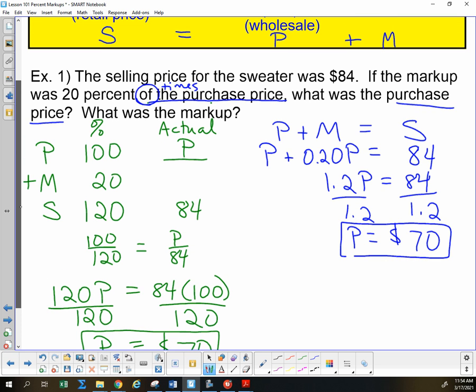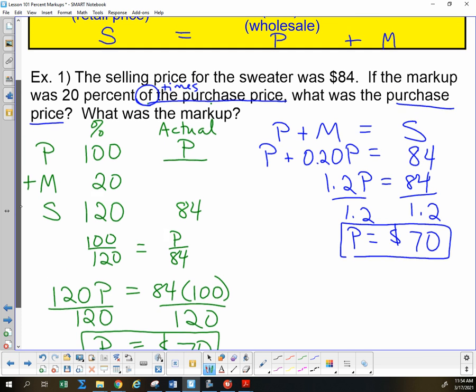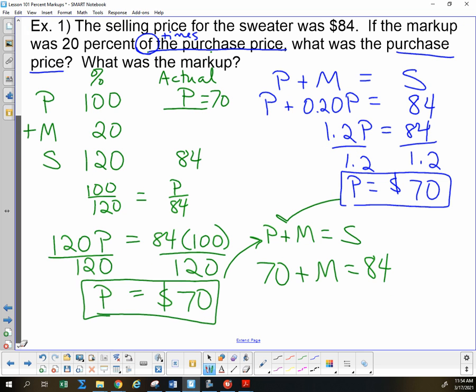Easiest way then to get the actual markup now that we know P is 70, and we know P plus M is the selling price. Either way, we can put 70 in for P. We know P, we know that the selling price was 84, and then we solve this, and we get that the markup is 14, and again, dollars, with the dollar sign on the left. That's pretty easy there. Next one.